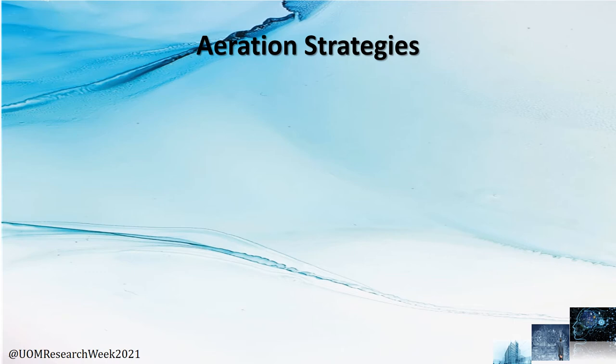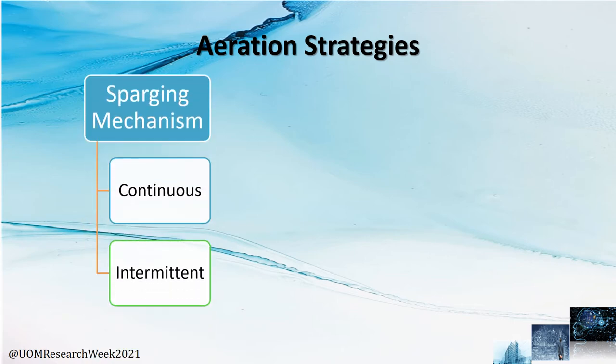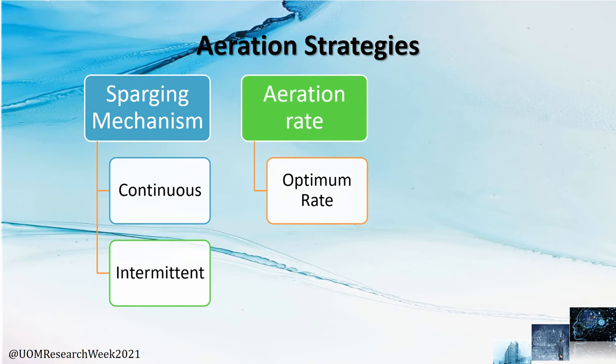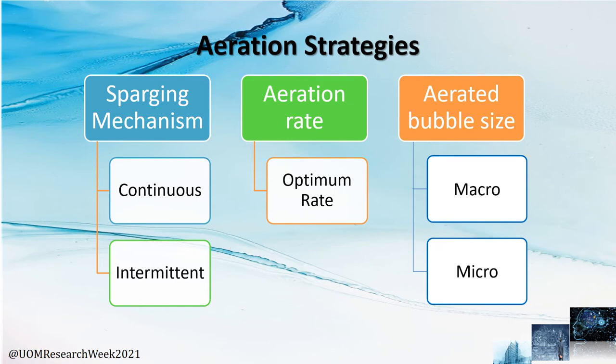There are three aspects of aeration strategy to consider. First, the sparging mechanism: CO2 can be supplied continuously or intermittently. Intermittent supply is generally preferred as it helps maintain the pH of the media while supplying carbon dioxide. Second, the aeration rate, which depends on the microalgae type — there is an optimum rate for each species. Third, the aerated bubble size: microbubbles are preferred as they increase CO2 transfer. Once all parameters are at their optimum levels, microalgae can be cultivated successfully.